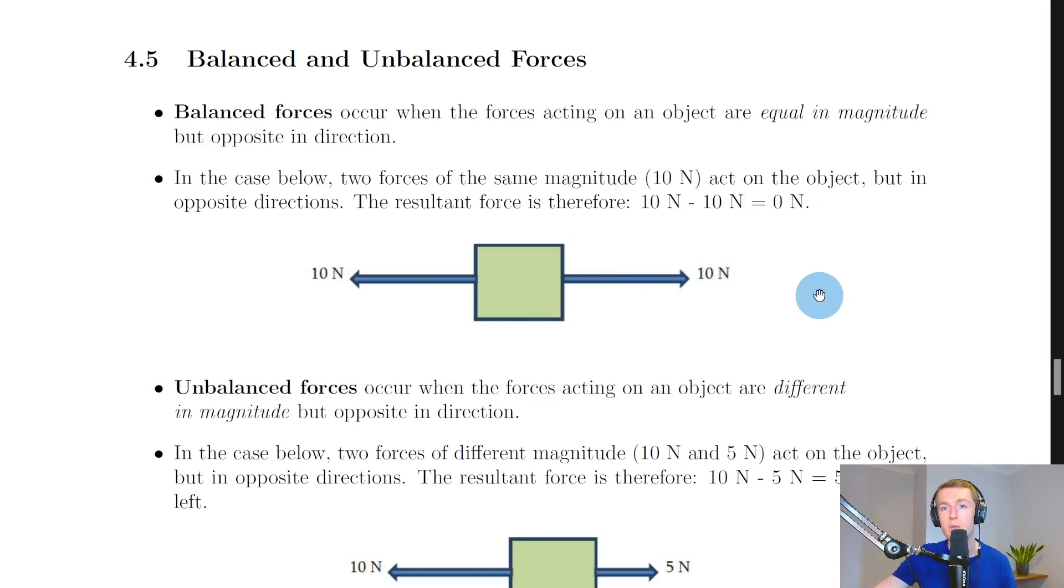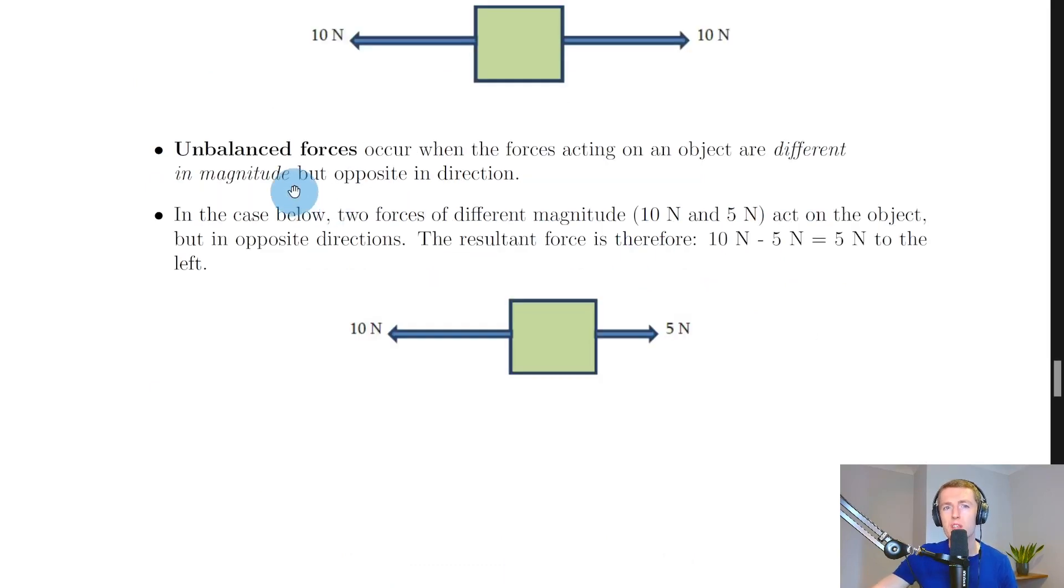Unbalanced forces, on the other hand, occur when the forces acting on an object are different in magnitude but still opposite in direction. In the case here, we can say that two forces of different magnitude, the 10 newtons to the left and the 5 newtons to the right, act on the object but in opposite directions.